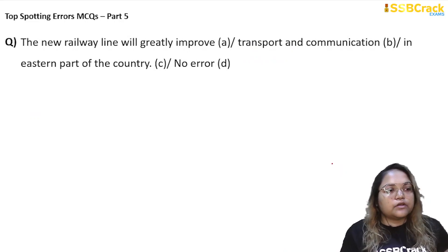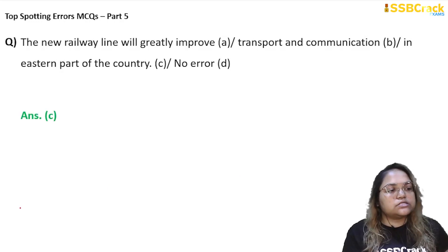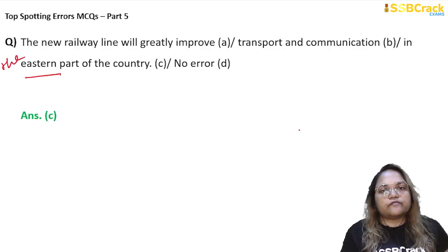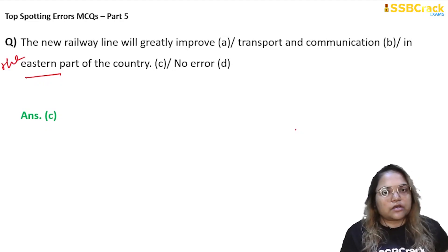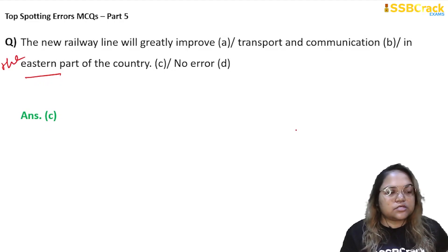Next question: 'The new railway line will greatly improve transport and communication in eastern part of the country.' At first glance there may seem to be no error, but there is definitely one in part C. When you use a word showing direction — eastern, northern, southeastern, western — you must use the article 'the' before it, because you are not only talking about a direction but also denoting a region as per that direction. So 'the' is missing before 'eastern' in part C, and C is the right answer.